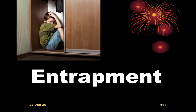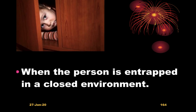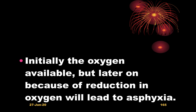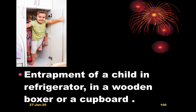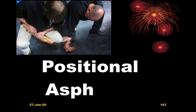Entrapment occurs when a person is trapped in a closed environment where oxygen is initially available but later decreases, leading to asphyxia. Entrapment of a child in a refrigerator, wooden box, or cupboard is common — children playing hide and seek may get entrapped. Positional asphyxia occurs when a body position prevents respiratory movement, leading to asphyxiation.